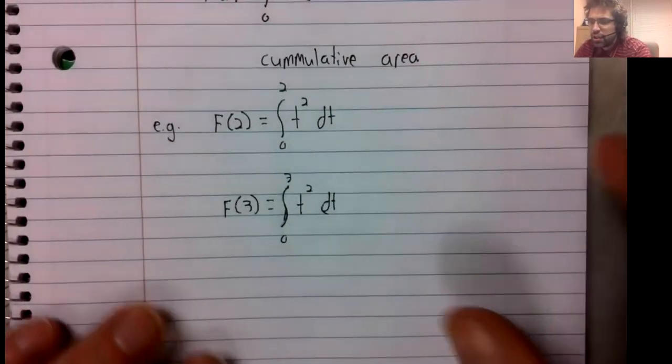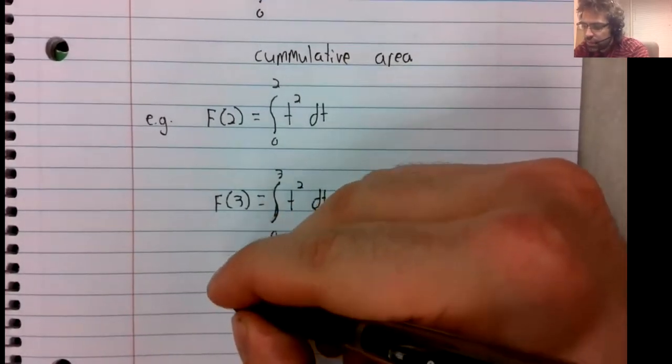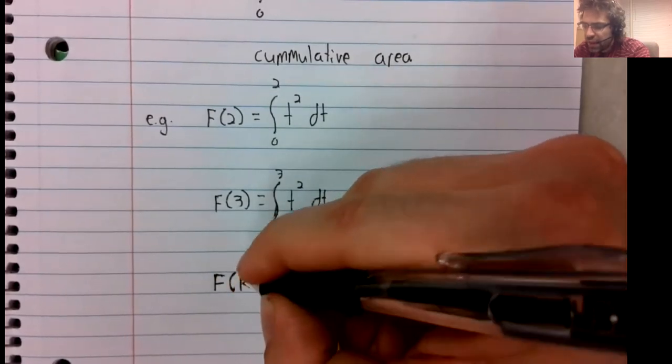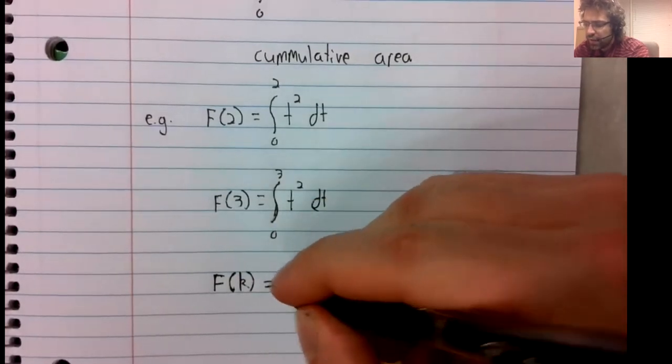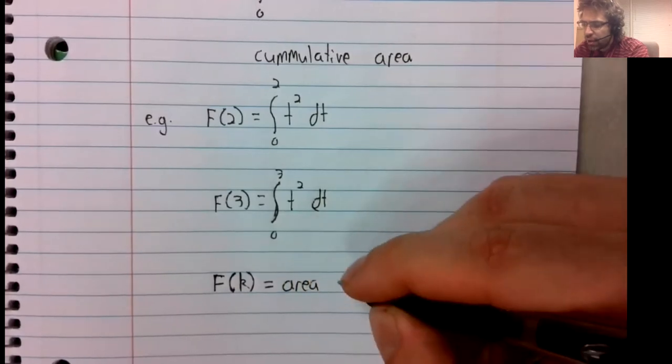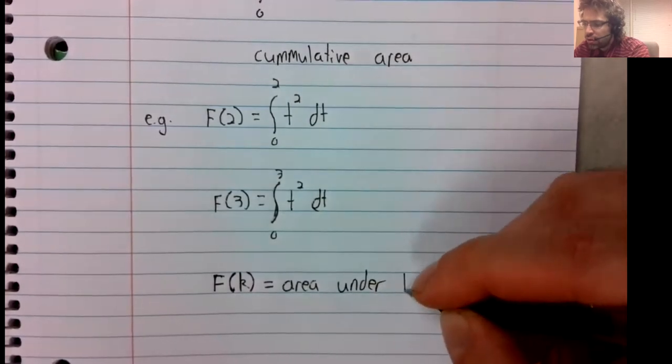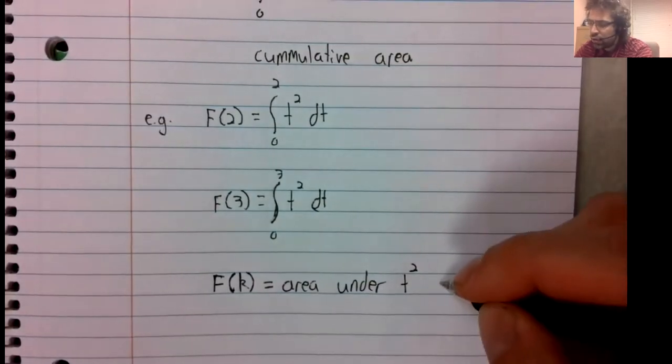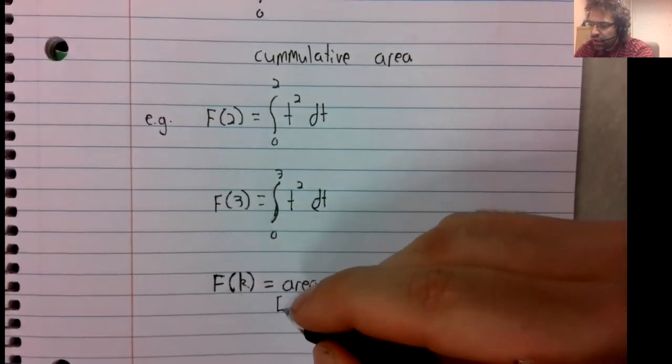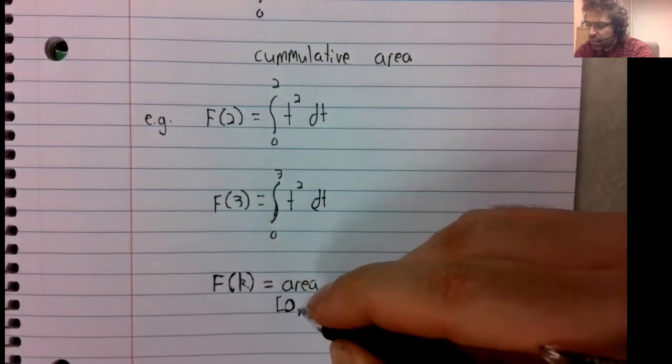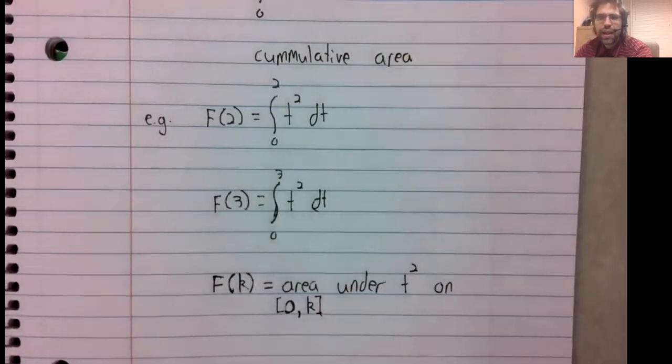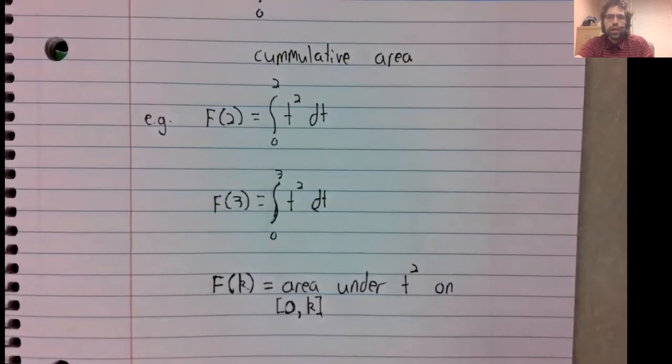And in general, F(k) is the area under f from the interval zero to k, and we have to find a function like this.